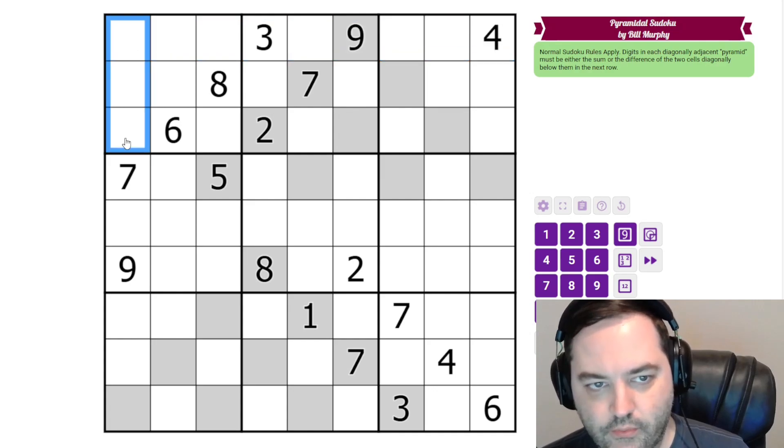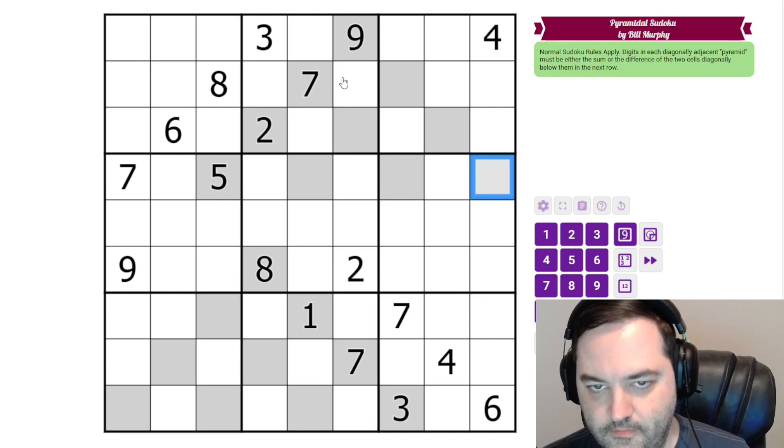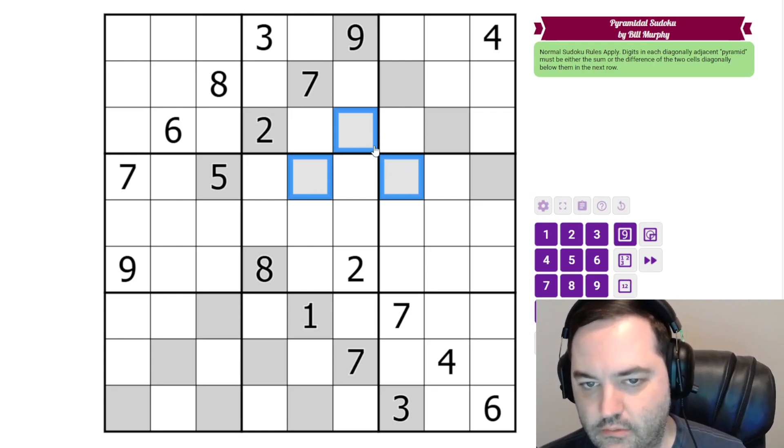We have normal Sudoku rules, 1 to 9 in each row, column, and 3x3 box. Additionally we have these pyramids made up of gray cells which are diagonally touching. And what these pyramids tell us, if we consider any three cells in this sort of configuration, where we have one cell on top and then the two cells that touches diagonally beneath it, the cell on top contains a digit which is either the sum of these two or the difference of these two.